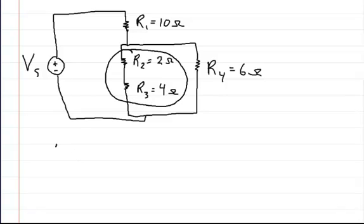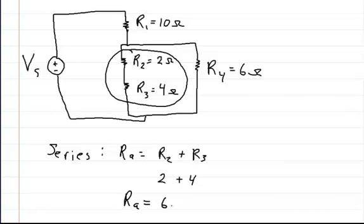This is a series portion. We're going to combine, I'm going to call this new, when I combine these two I'm going to have a new resistance and I'm going to call that Ra. So Ra is equal to R2 plus R3, and R2 is 2 ohms and R3 is 4. So the new resistor Ra is equal to 6 ohms.